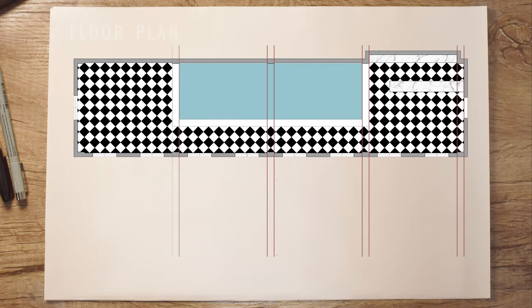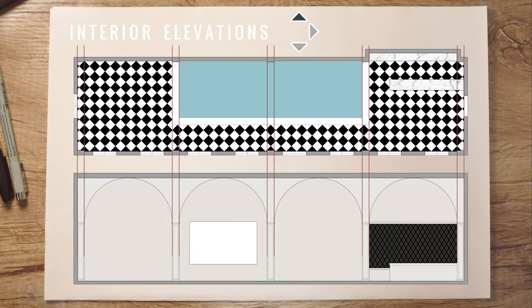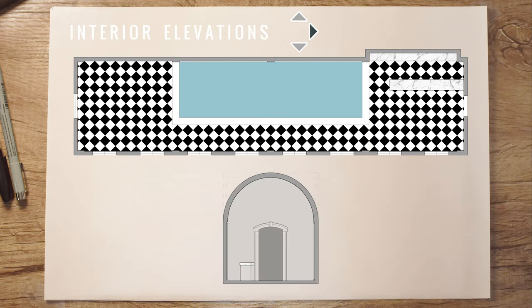We have the harlequin tile throughout. Looking at the interior elevations, this is what the wall of French doors looks like. The other wall will have a projection screen for movies, and to the right will be a wine rack with glass that separates the wine from the outside. This is the third elevation looking down the long axis of the entire room.